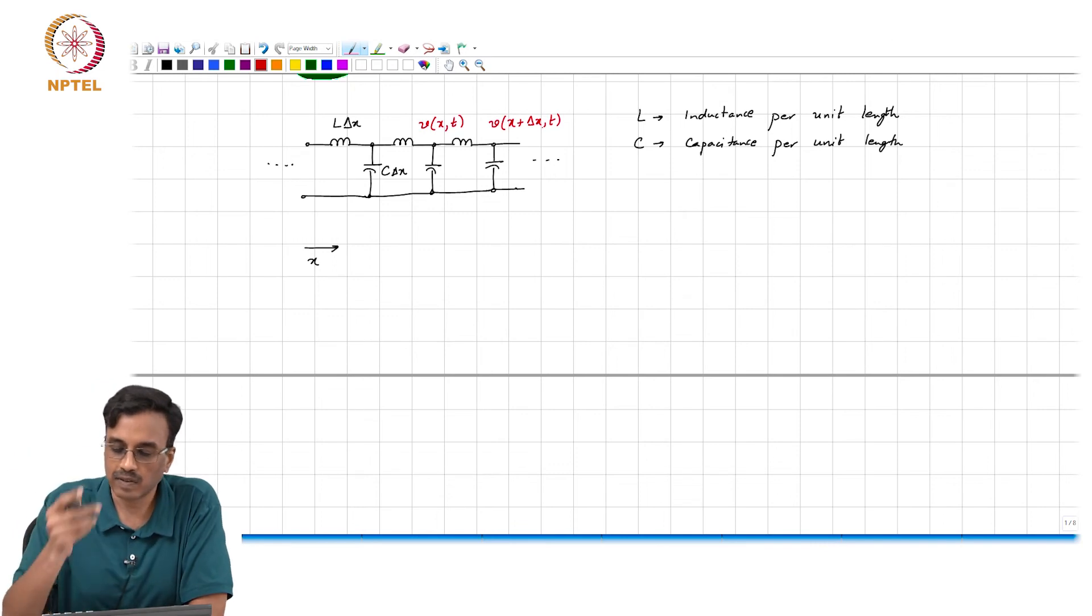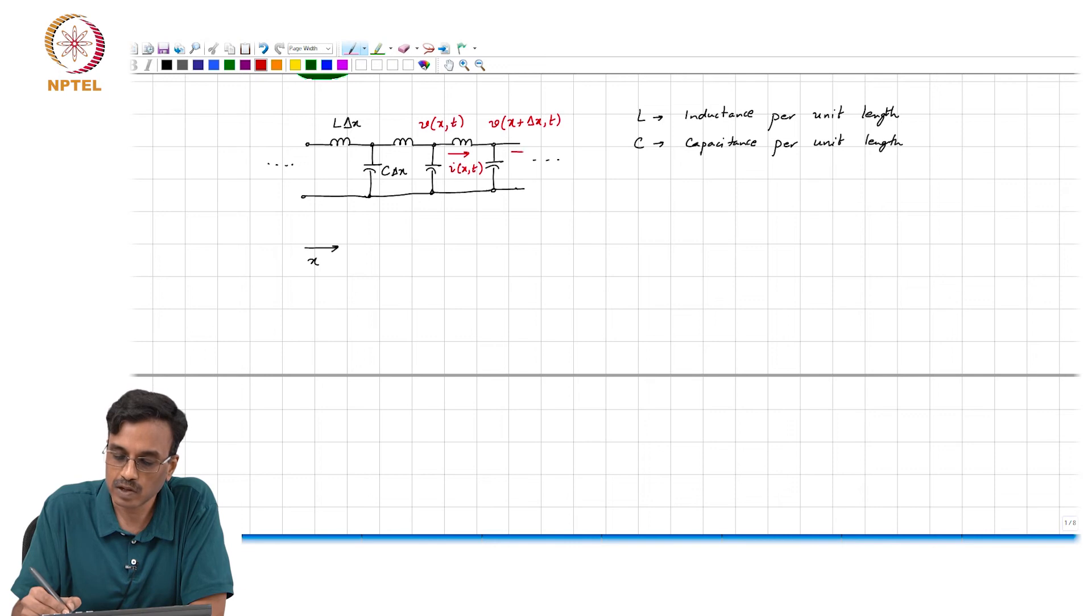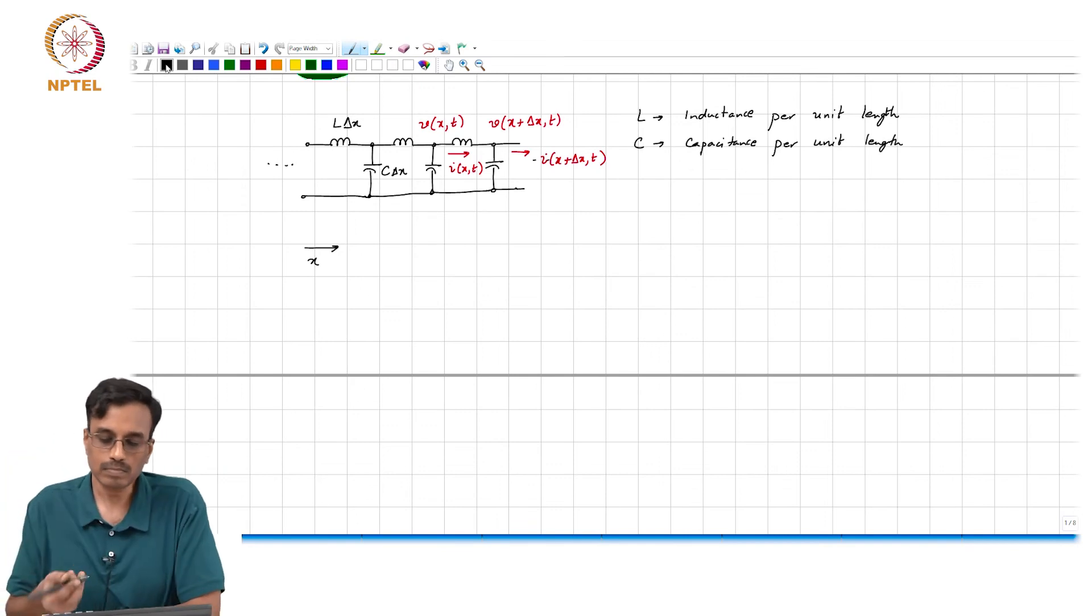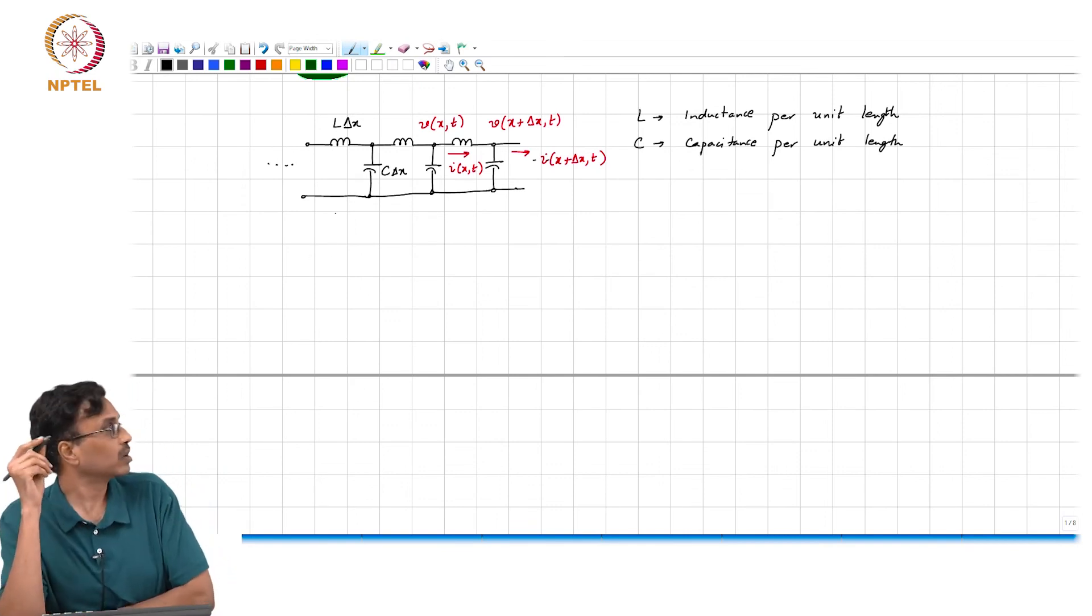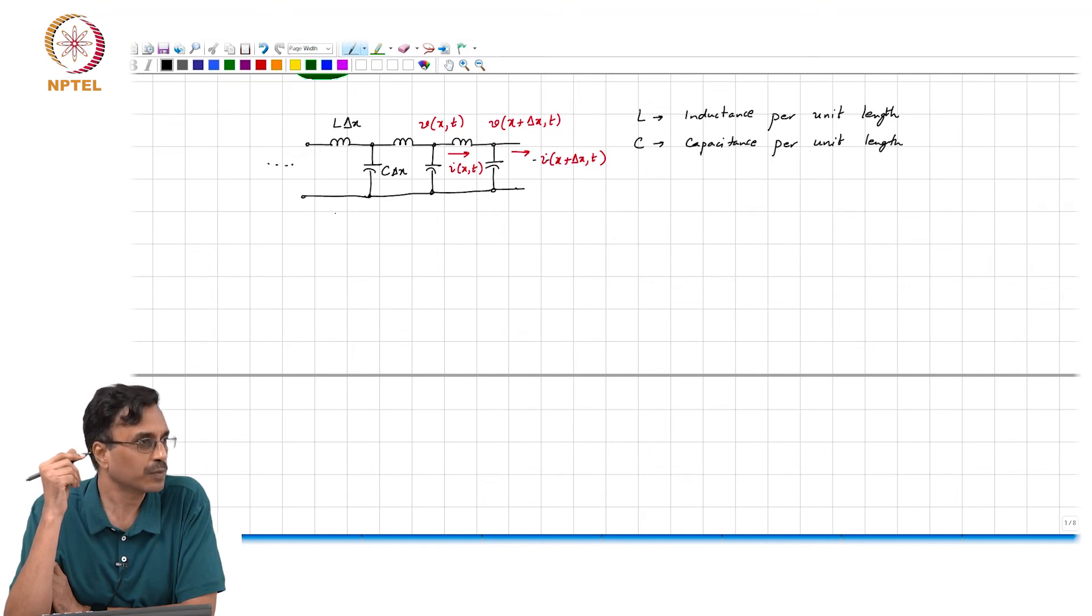And remember that as we go along like this, this is x, and therefore the voltage at any point on this network is basically a function of both space and time. If this is v of x comma t, this is going to be v of x plus delta x comma t. And current is also a function of space and time. So this is i of x comma t, this is i of x plus delta x comma t.